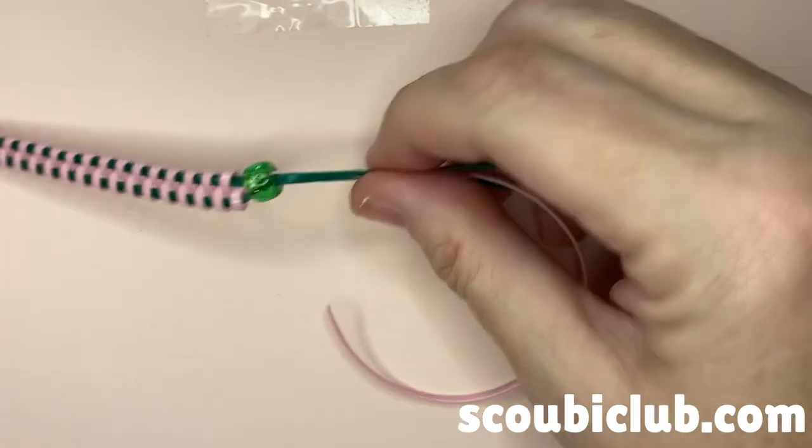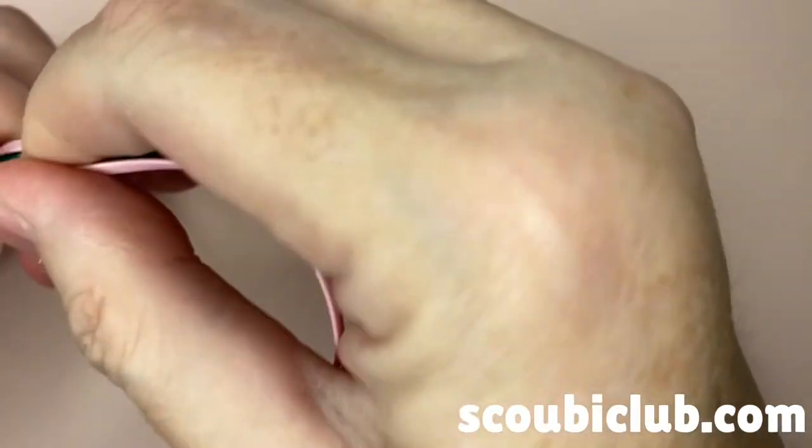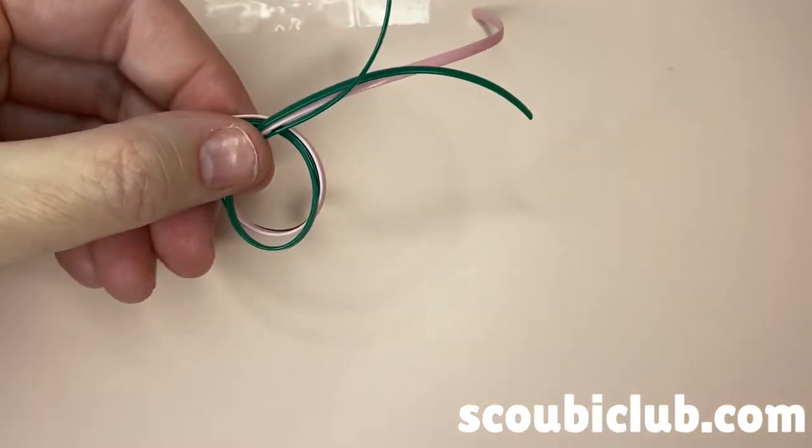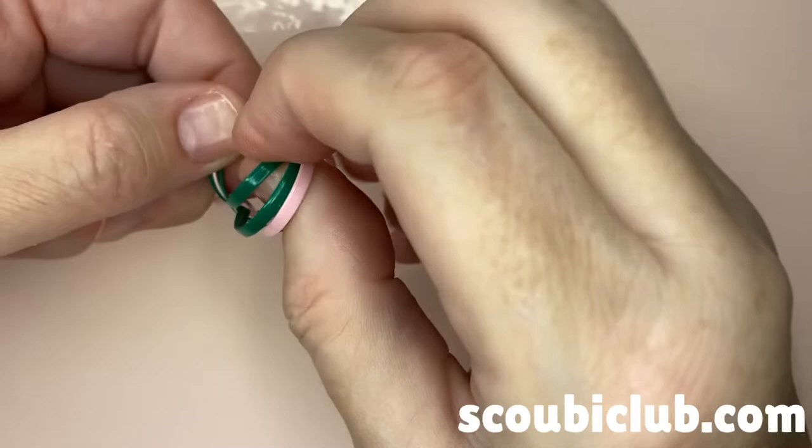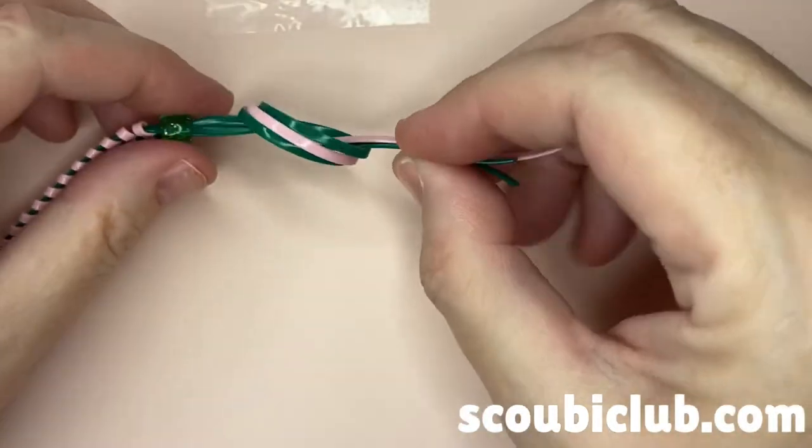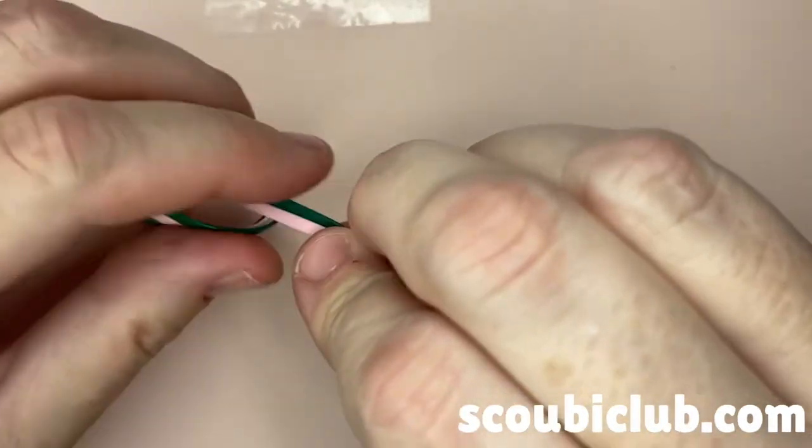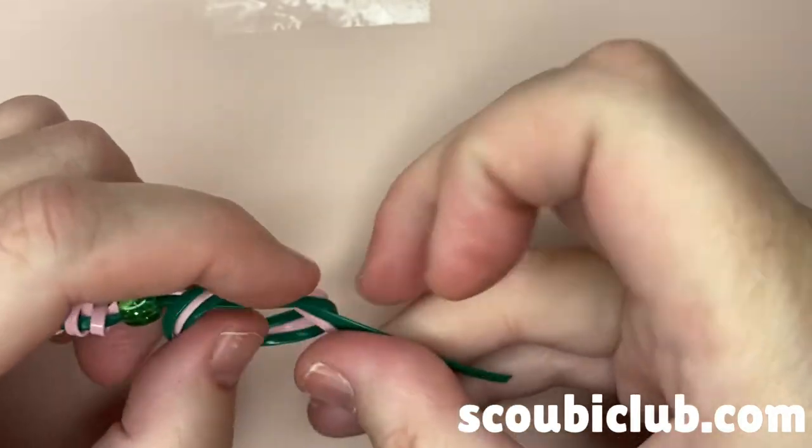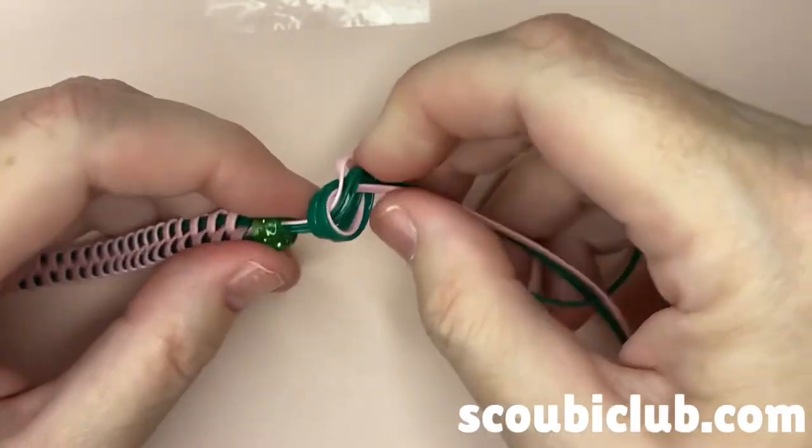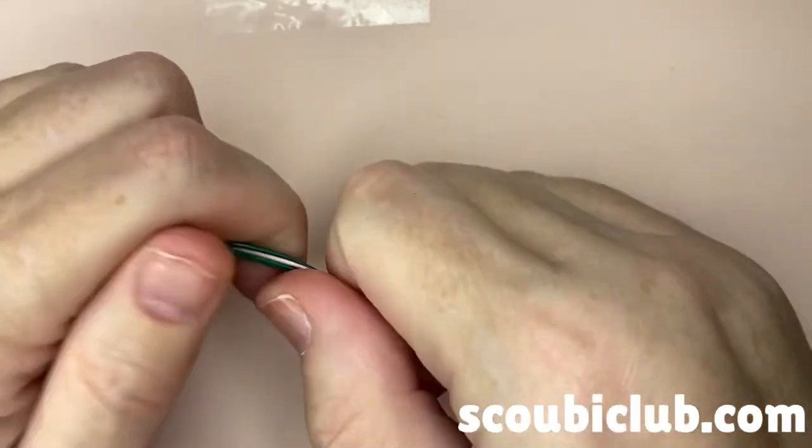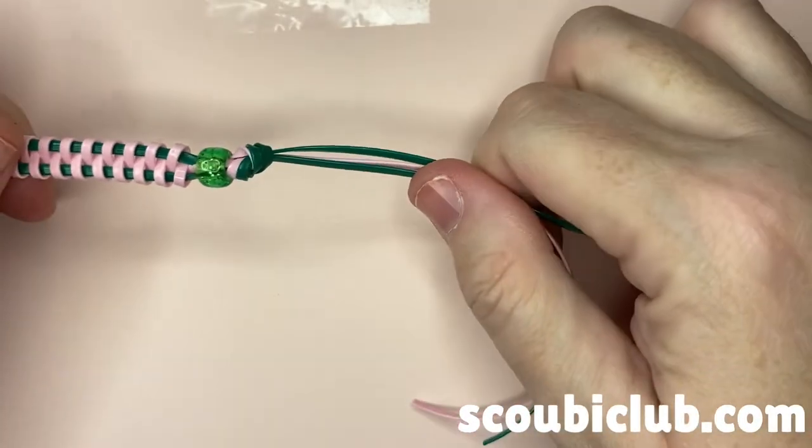From here, you're going to want to do another overhand knot to secure the bead. Again, make a loop, cross it over and go through, and then tighten. If you are a younger crafter, you may need to ask your parents or an adult for help with the overhand knot.